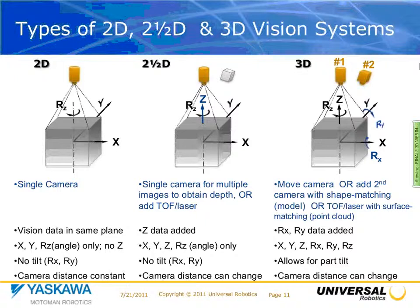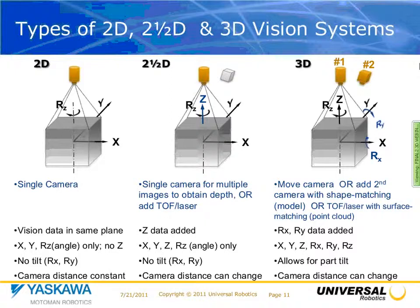If you need full 3D, you're adding rotation around X and rotation around Y, and Z can be variable. In this case, you add a second camera, or you can add a time-of-flight or laser with different methodologies. In summary of the types: we have a single stationary system, a single moving system, and a binocular stereo system. You can achieve 2.5D or 3D with a variety of options.